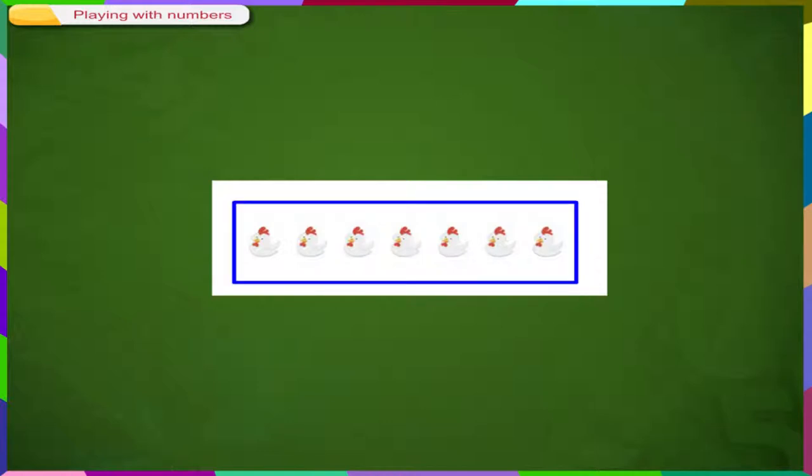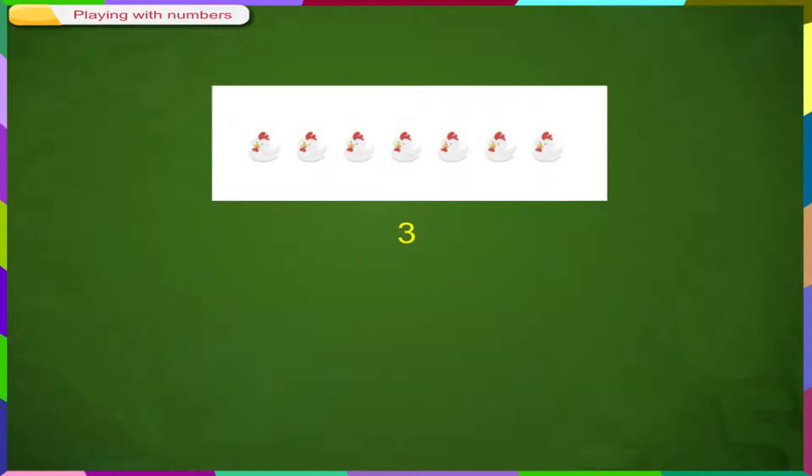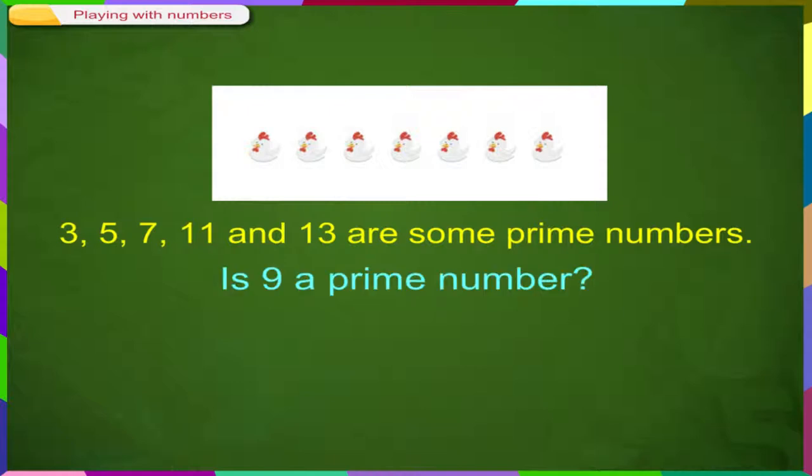So, we can easily say, 3, 5, 7, 11 and 13 are some prime numbers.